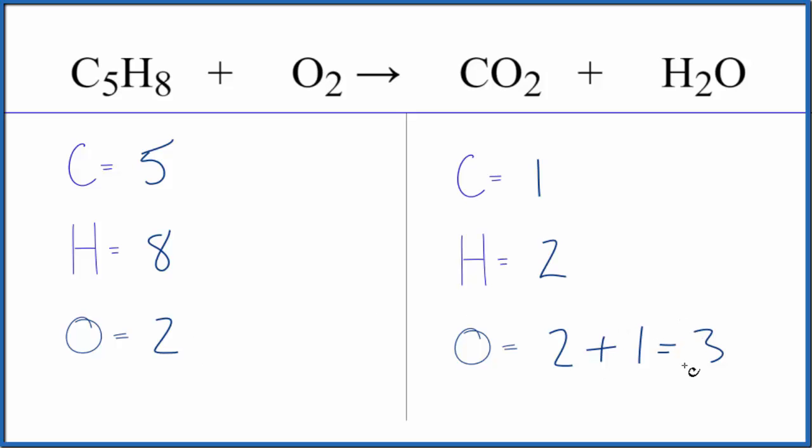Probably best to leave the oxygens to last when you balance equations. Let's see, why don't we just put a five in front of the CO2? One times five, that would balance the carbon atoms, so those are done. We do need to update the oxygens though. So now we have two times five, that's ten, plus this one out here, that gives us eleven.